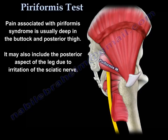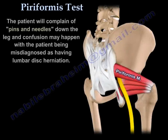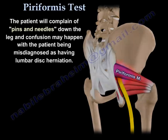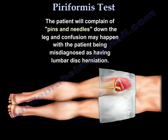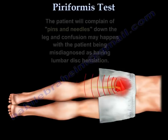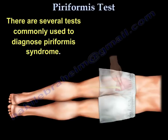The pain associated with the pariformis syndrome is usually deep in the buttock and the posterior thigh. It may include the posterior aspect of the leg due to irritation of the sciatic nerve. The patient may complain of pins and needles down the leg, and confusion may happen and the patient may be misdiagnosed as lumbar spine disc herniation. There are several tests commonly used to diagnose pariformis syndrome.